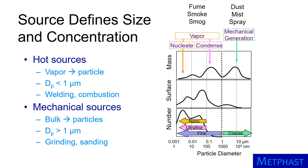These particles are known as nano, ultrafine, and fine particles, or more commonly as fume, smoke, and smog. They dominate particle number concentration and can be an important component of mass distributions.